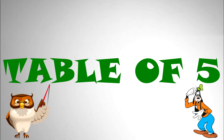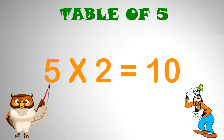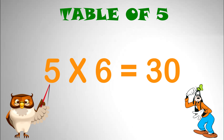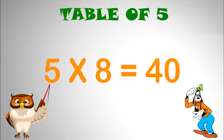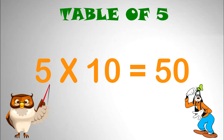Table of 5. 5 x 1 equal to 5. 5 x 2 equal to 10. 5 x 3 equal to 15. 5 x 4 equal to 20. 5 x 5 equal to 25. 5 x 6 equal to 30. 5 x 7 equal to 35. 5 x 8 equal to 40. 5 x 9 equal to 45. 5 x 10 equal to 50.